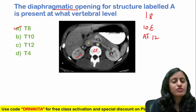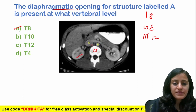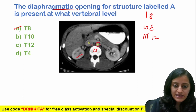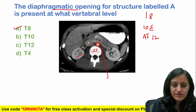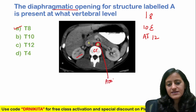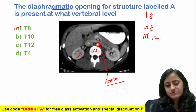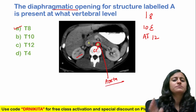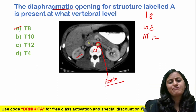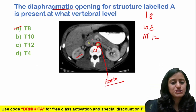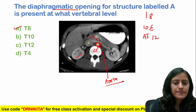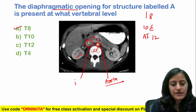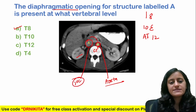This is a contrast CT. The structure labeled B here is the aorta — just in front of the vertebra, just in the left paramedian position. That's the aorta. To the right of the aorta, this one is the IVC.